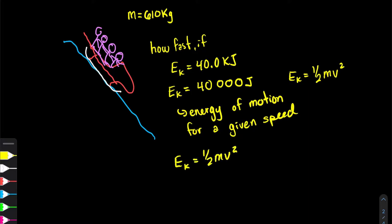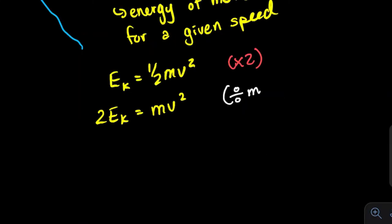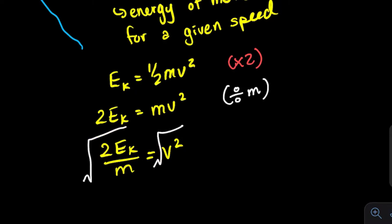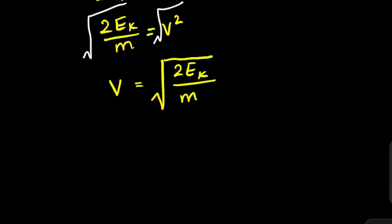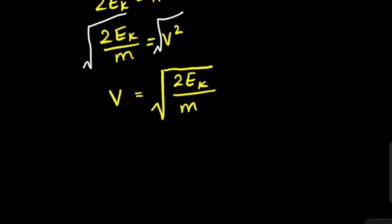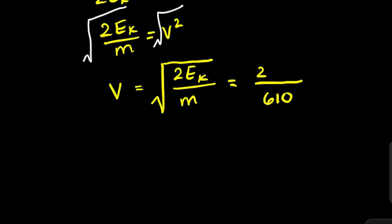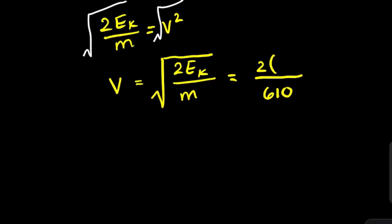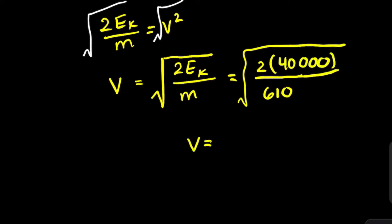In order to isolate for the speed, I'm going to multiply both sides of the equation by 2 to get rid of the fraction, then divide both sides by the mass, and then take the square root on both sides. Now that we have the expression, all we do is substitute in the values: mass was 610 and kinetic energy in joules was 40,000. We get approximately 11.45 m/s.